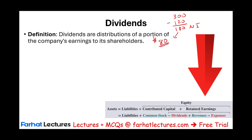Equity is the umbrella. Under equity we have retained earnings, and under retained earnings we have revenues, expenses, and dividends. While paying dividends can attract investors and provide a return on their investment, it also reduces the amount of retained earnings that can be reinvested in the business. Businesses pay dividends for two main reasons: owners may need money to live, and paying dividends can attract investors by showing them they will share in the profit.